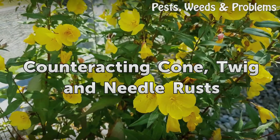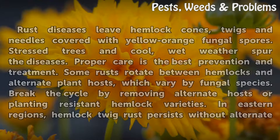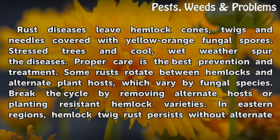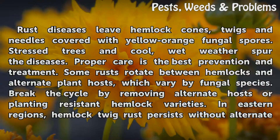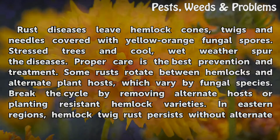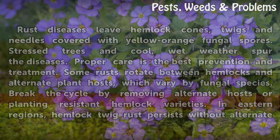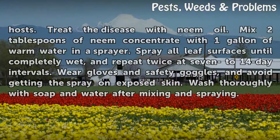Rust diseases leave hemlock cones, twigs, and needles covered with yellow-orange fungal spores. Stressed trees and cool, wet weather spur the diseases. Proper care is the best prevention and treatment. Some rusts rotate between hemlocks and alternate plant hosts, which vary by fungal species. Break the cycle by removing alternate hosts or planting resistant hemlock varieties. In eastern regions, hemlock twig rust persists without alternate hosts.